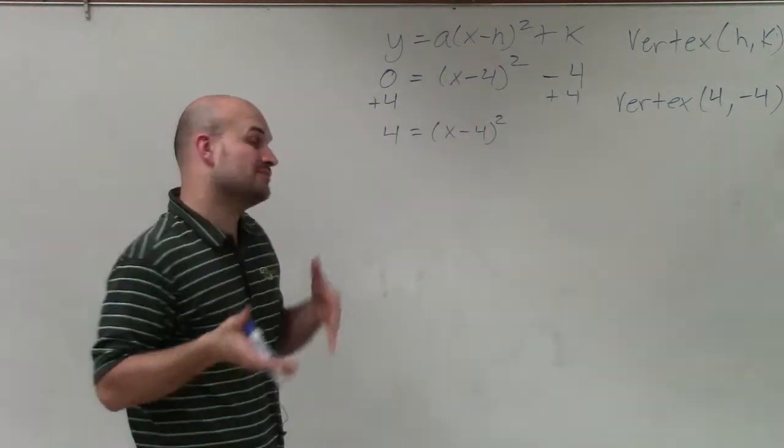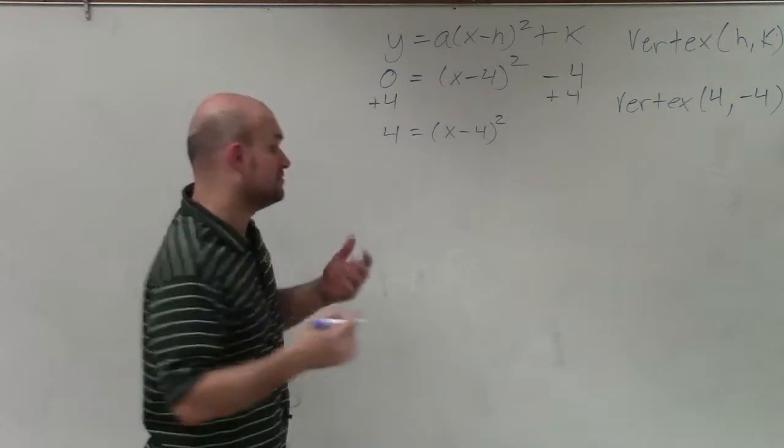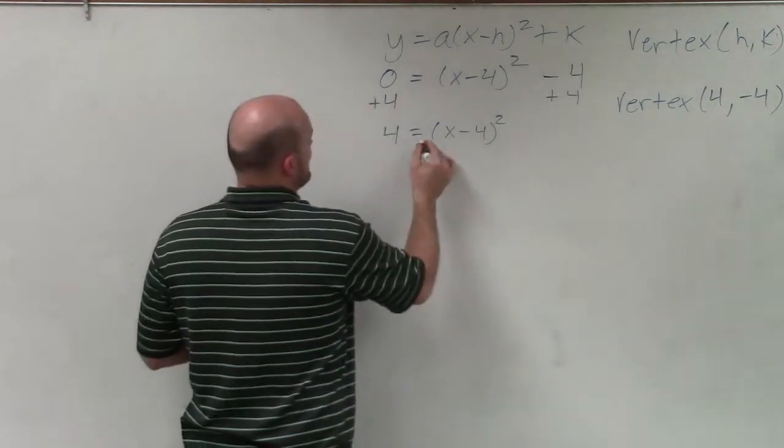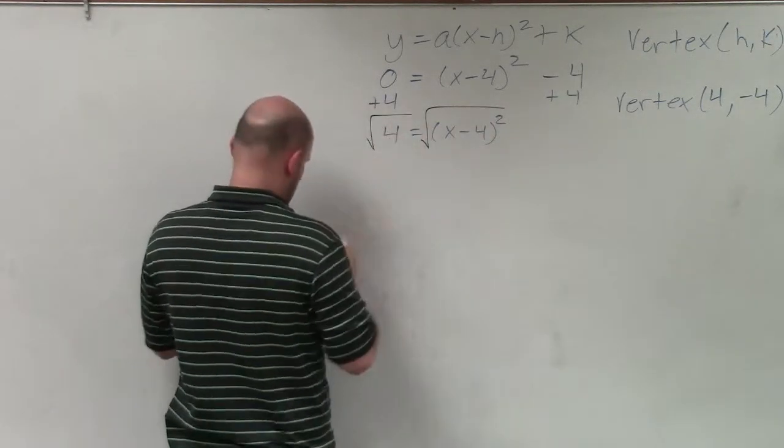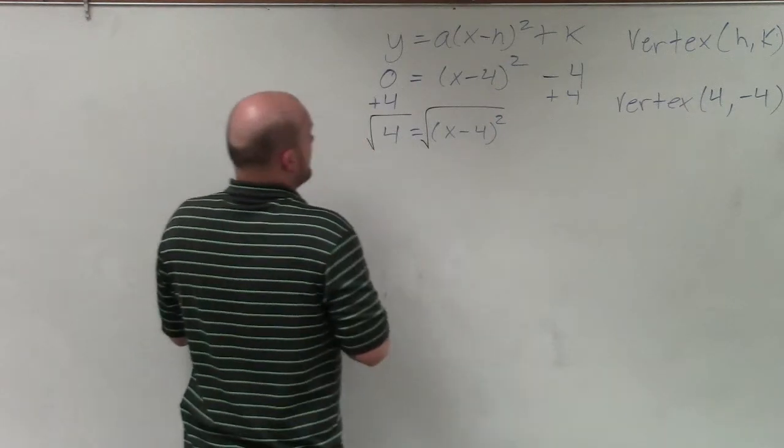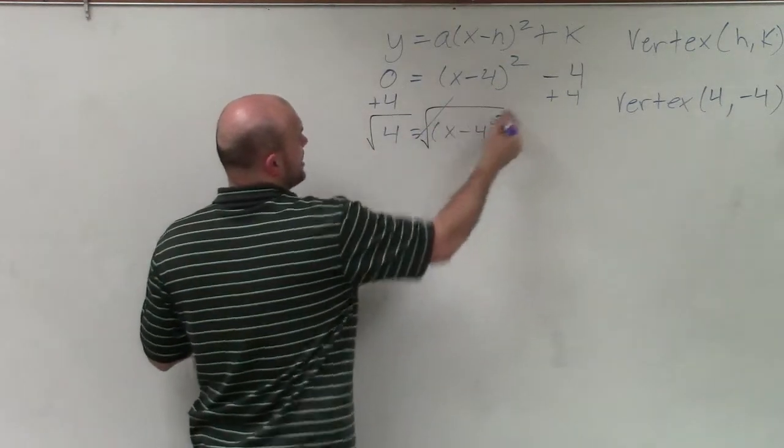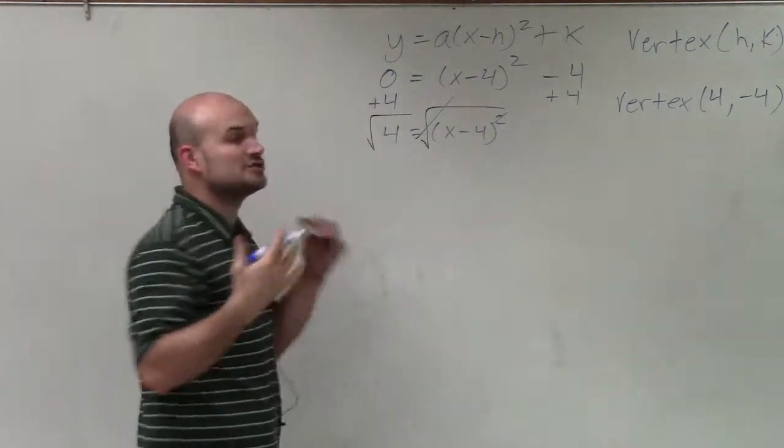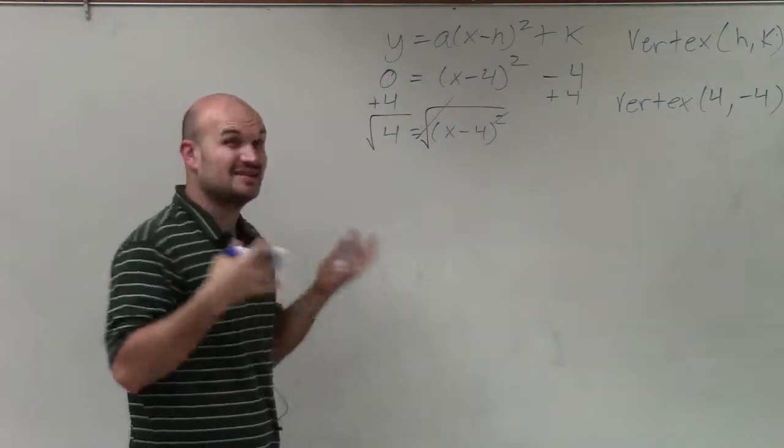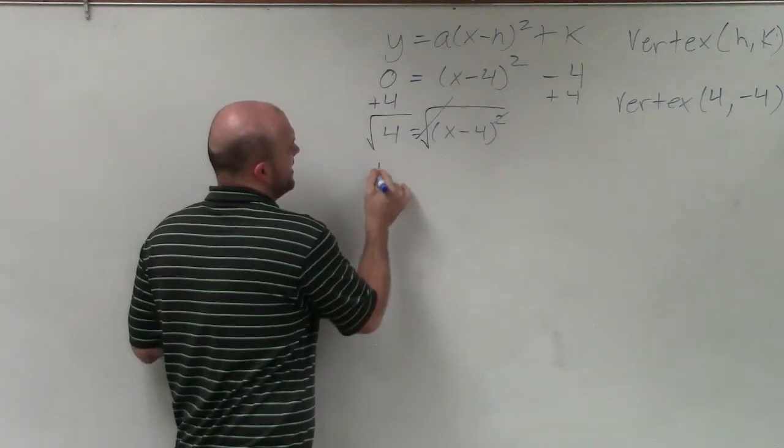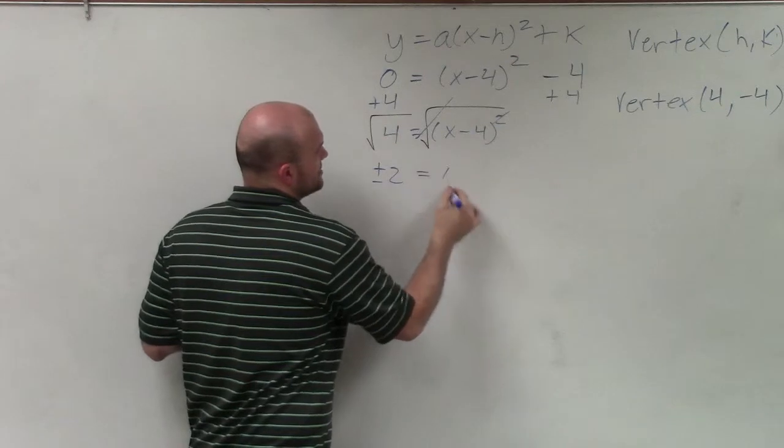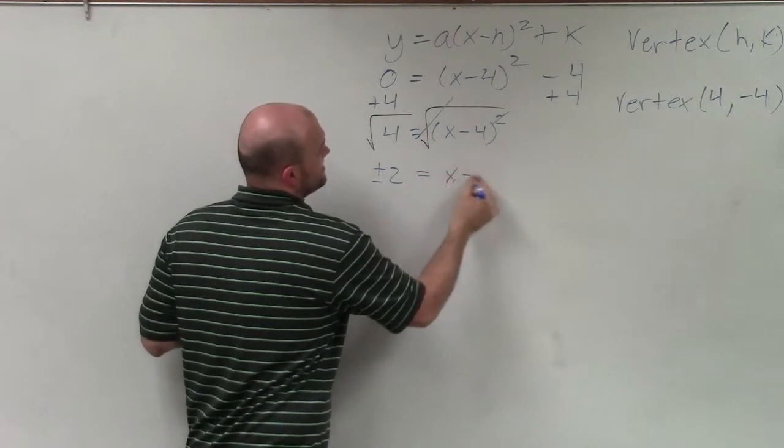Now I use the square root method, which is the inverse operation of squaring. So I take the square root of both sides. When I do that, those undo each other. Remember, whenever you introduce the square root, you have to include the positive and the negative value. So therefore, I have plus or minus 2 equals x minus 4.